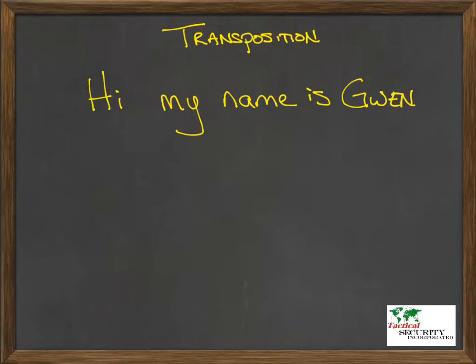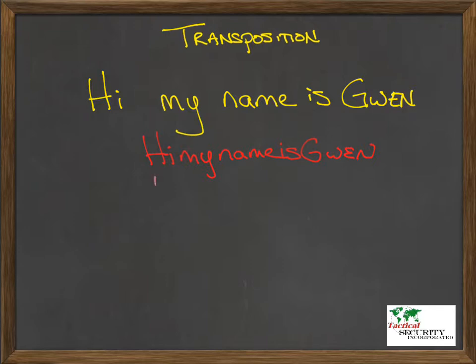Let's do something really basic. The sentence is: 'Hi, my name is Gwen' — because that's me. What we'll do is first go ahead and take out the spaces, so it'll become 'himynameisGwen' all strung together. The next trick is to get rid of any capitalization changes, because that could disclose more information to somebody. So: 'himynameisgwen' — no capitalization, no spaces.